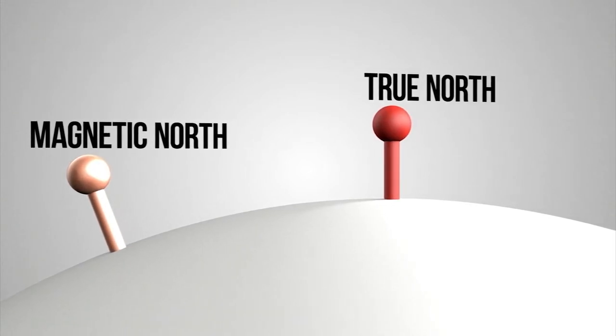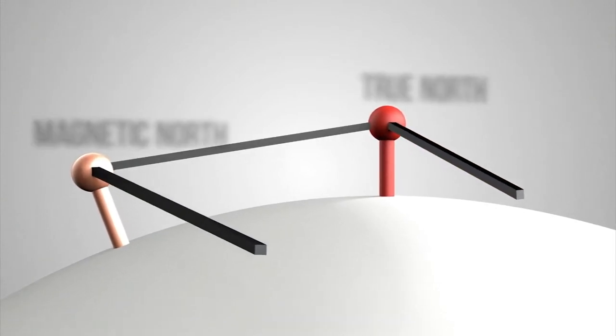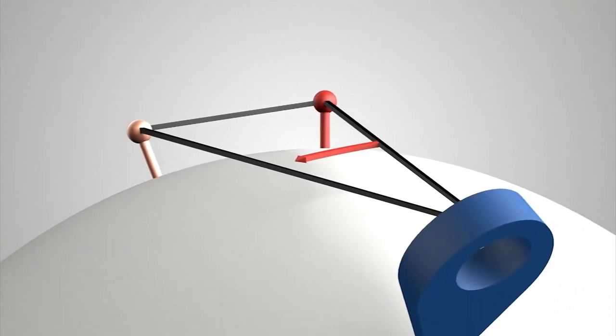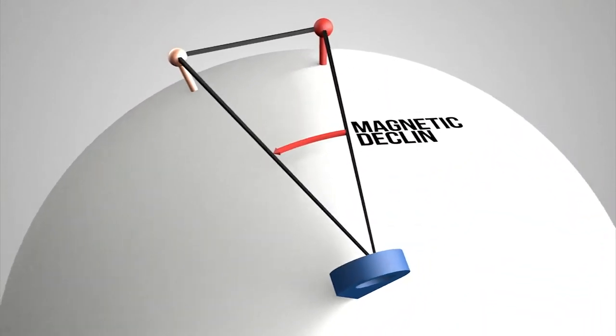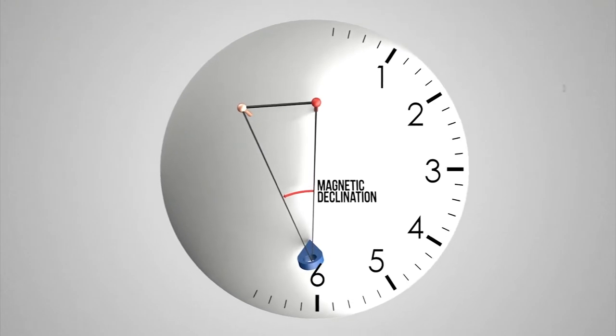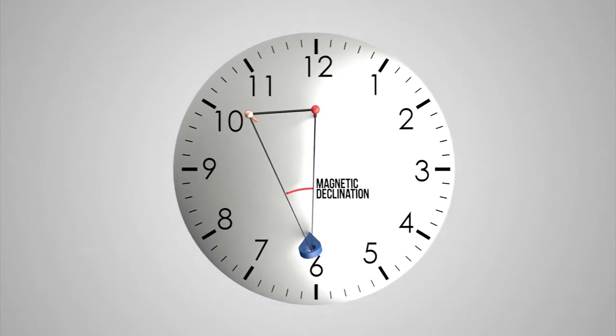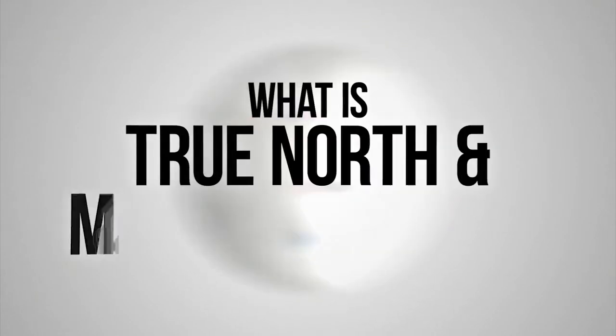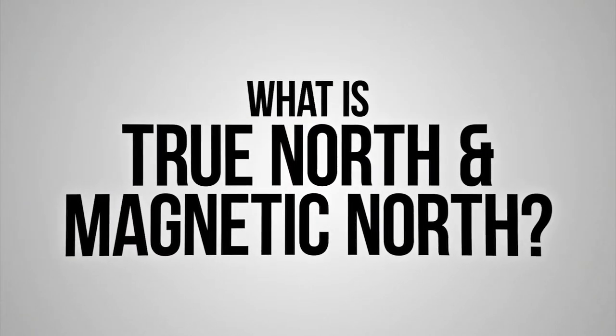Specifically, magnetic declination is the angle between true north and magnetic north with respect to location and time. So what is true north and magnetic north?